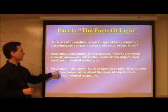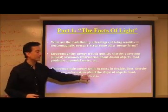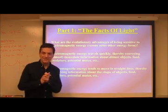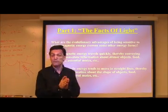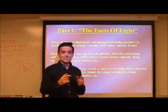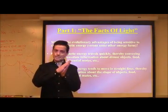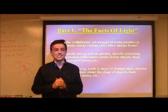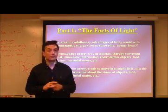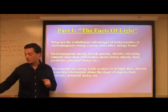We can also say that electromagnetic energy tends to move in straight lines, and what's important about that is it preserves information about the shape of objects — food, predators, or potential mates. Not only are we getting information very quickly, but we're getting information that preserves the shapes of objects in the real world. Light will eventually bend when refracted by some object, but through most of its traverse it moves in straight lines, giving us distant and accurate information about objects very quickly.